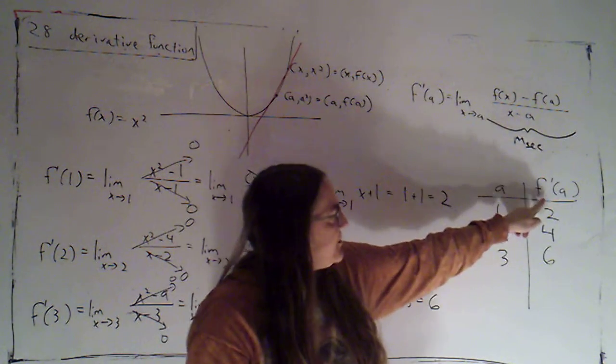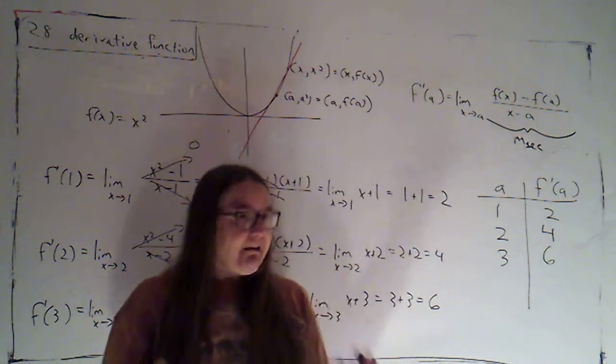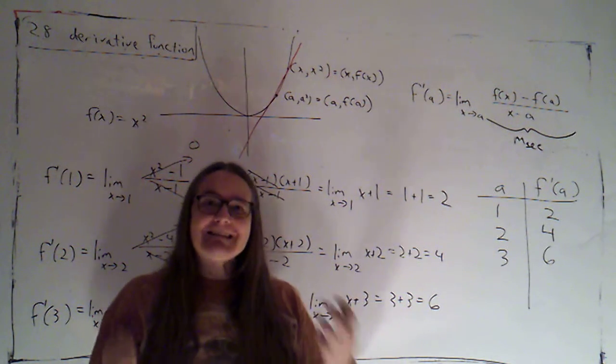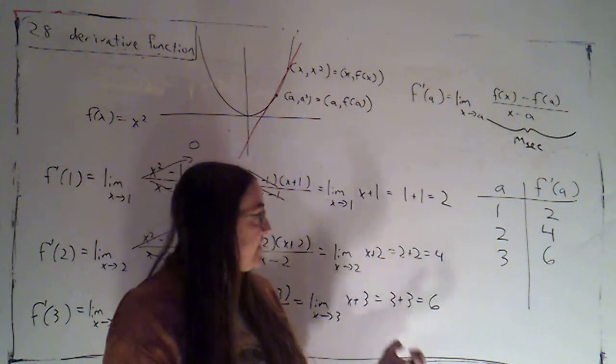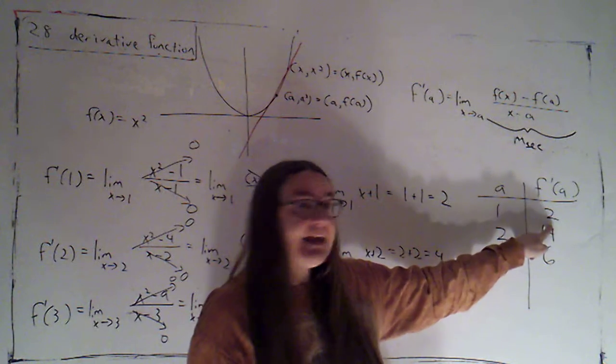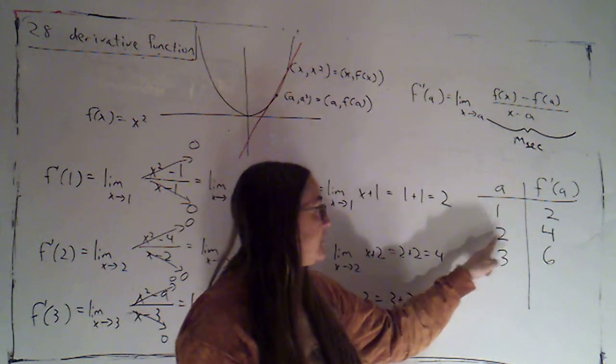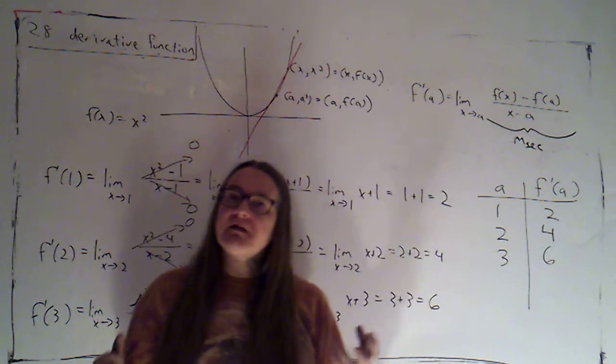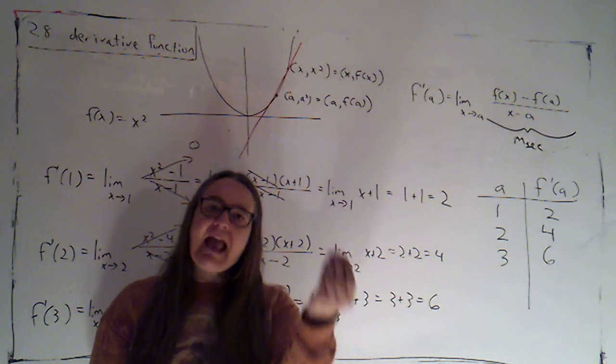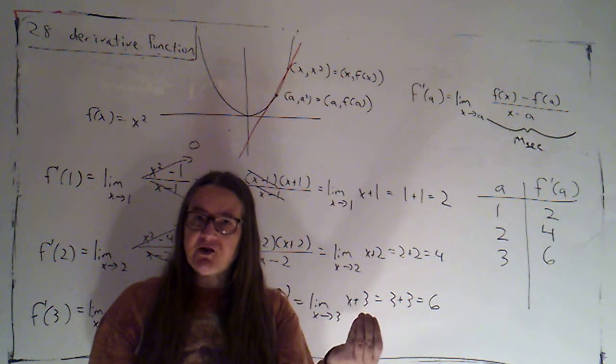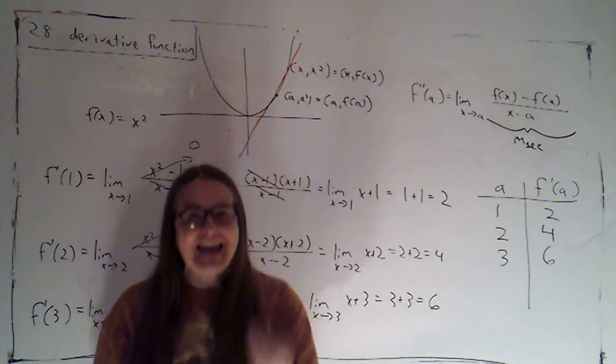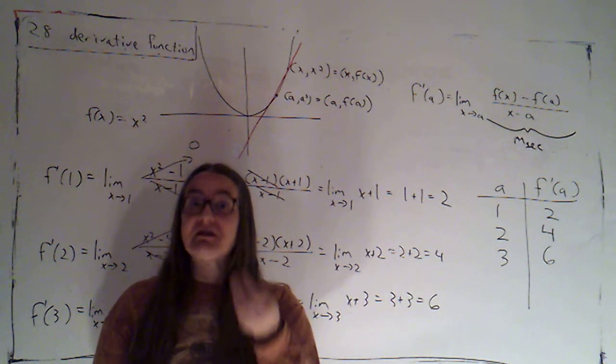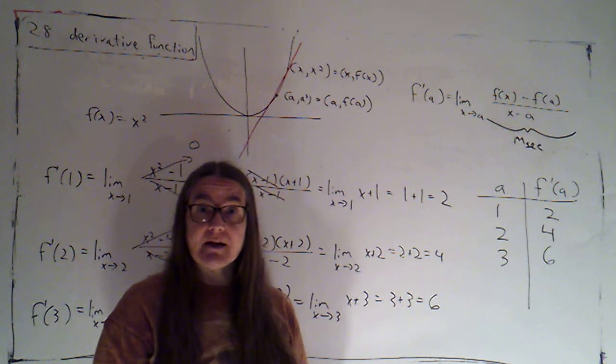Now this notation here suggests that f prime is itself a function. It's a function so that when I plug in 1, I get out 2. When I plug in 2, I get out 4. It's a function so that when I plug in the x value of the point of tangency, I get out the derivative, or the slope of the tangent line at that point.